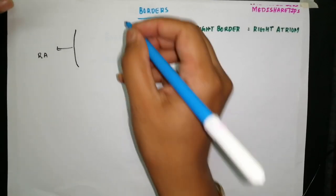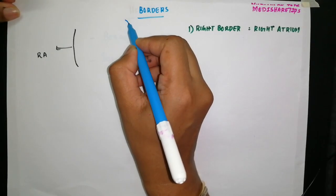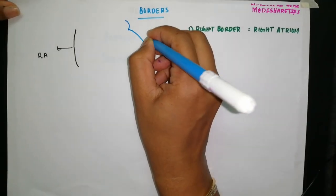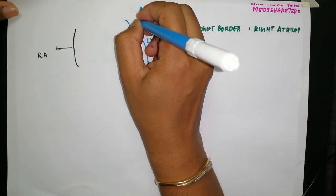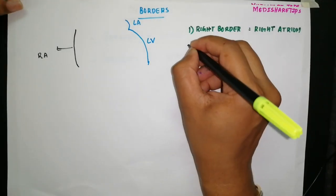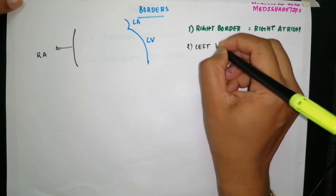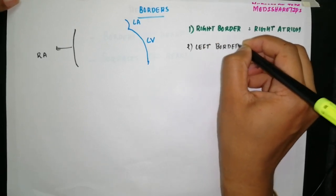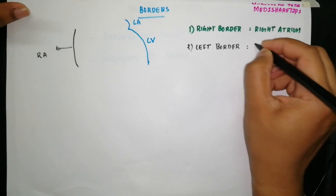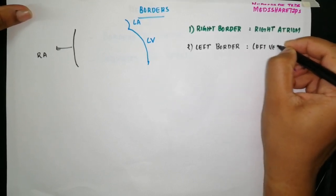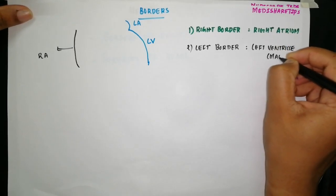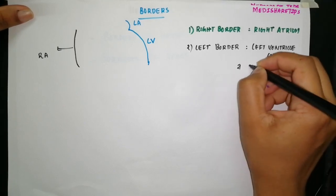The second border is the left border. The left border is mainly formed by the left ventricle and partly by the left auricle. The right border is somewhat straight, while the left border is oblique and curved, formed mainly by the left ventricle and partly by the left auricle.